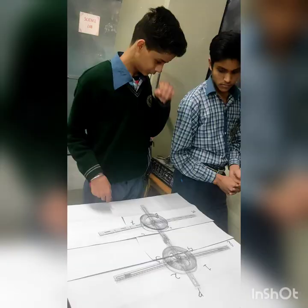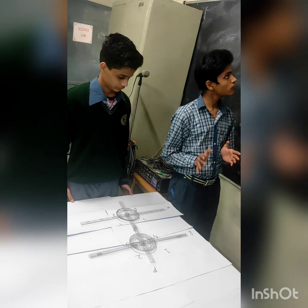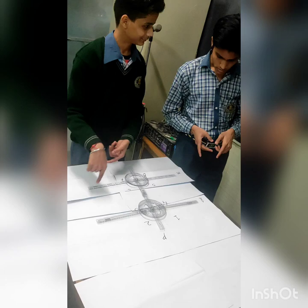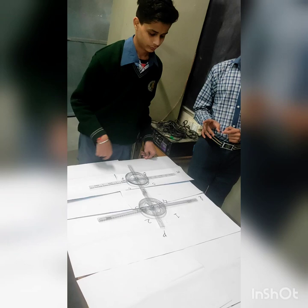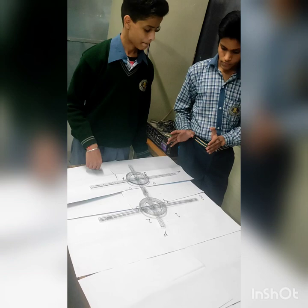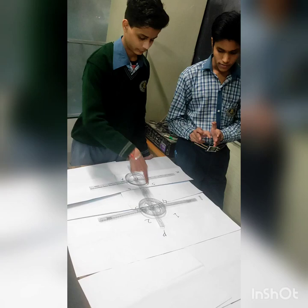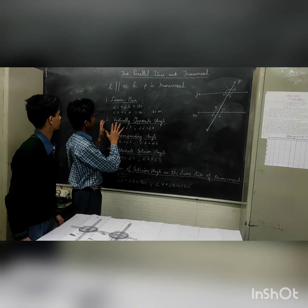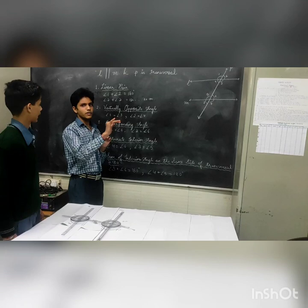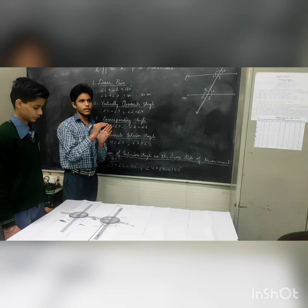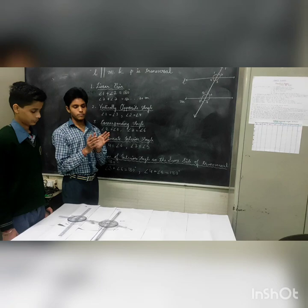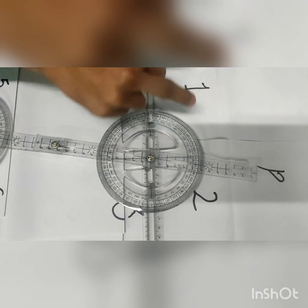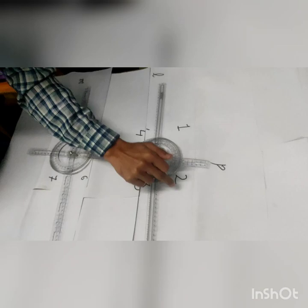Now we come to our main point, which is the model of parallel lines and a transversal line. In this figure we see two lines, L and M, and a third line P which is the transversal line. The parallel lines L and M are intersected by the transversal line P at different points.